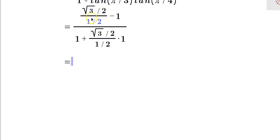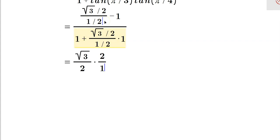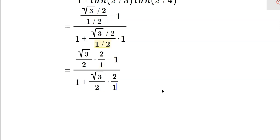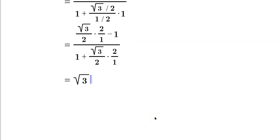Now we clean up this gnarly-looking fraction. Working on root 3 over 2 divided by 1 half: using keep-change-flip, dividing by 1 half is the same as multiplying by 2 over 1. So root 3 over 2 times 2 over 1 — the 2s cancel — leaving root 3. The same cancellation happens in the denominator. So the numerator becomes root 3 minus 1, and the denominator becomes 1 plus root 3.